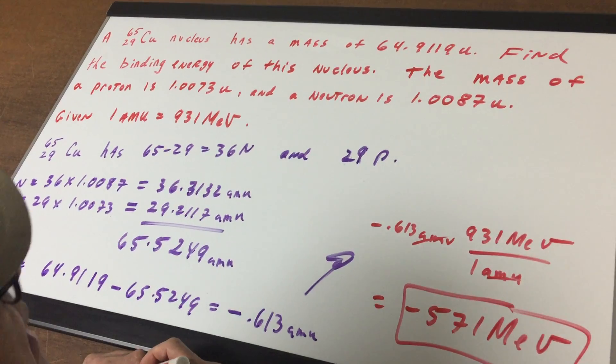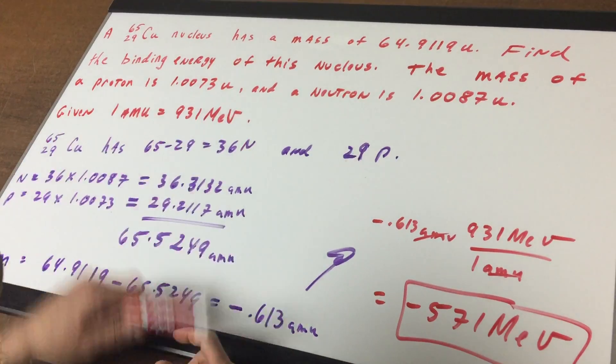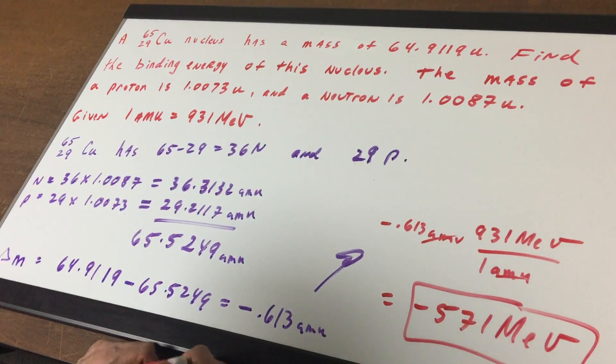I gave you the mass of the proton, the mass of the neutron, and the conversion that one AMU equals 931 mega electron volts.